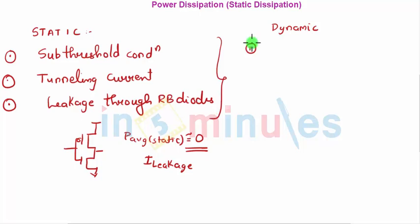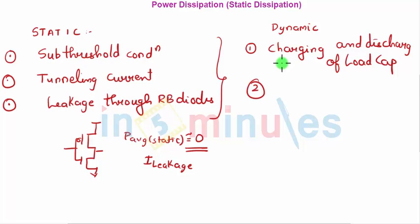In dynamic power dissipation we have switching power which is nothing but charging and discharging of load capacitor, and we also have short circuit current which is because of a condition when both your pull up and pull down are on or your NMOS and PMOS both are partially on.